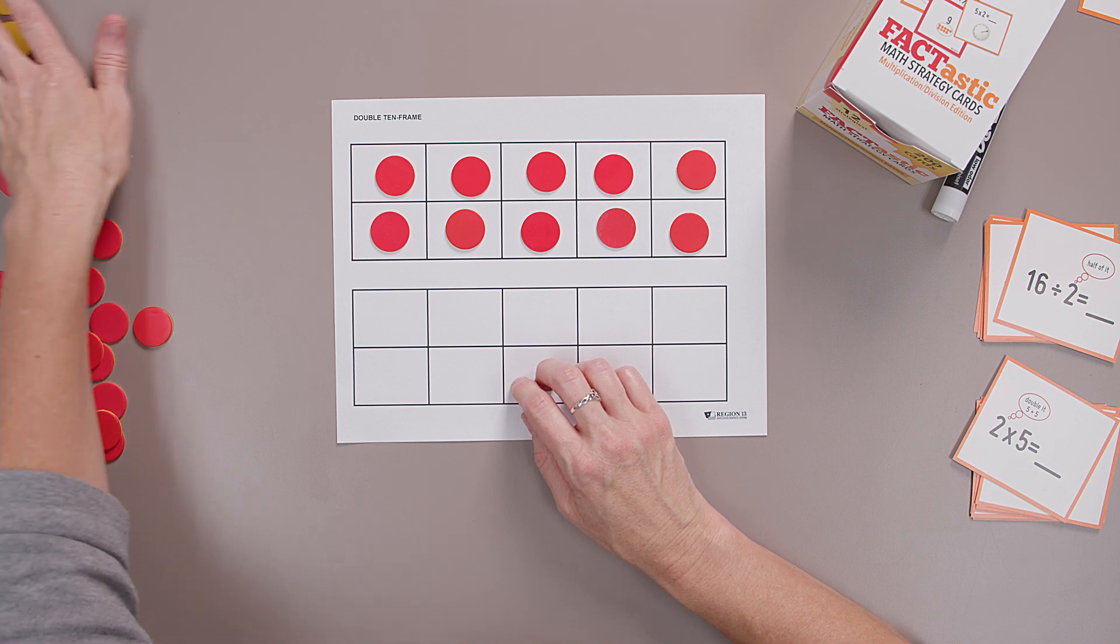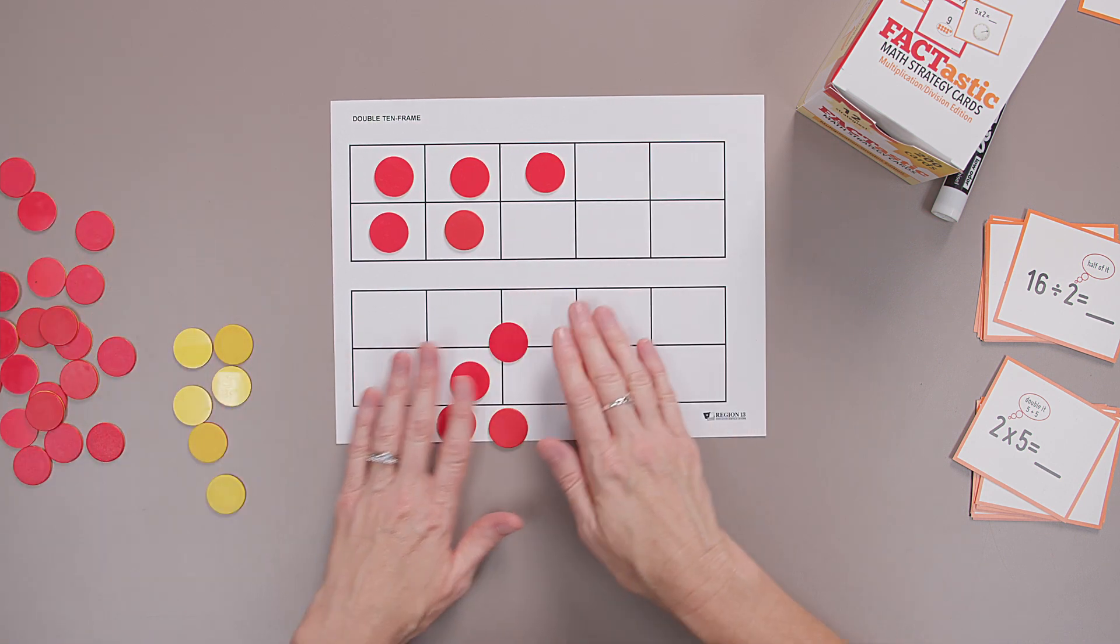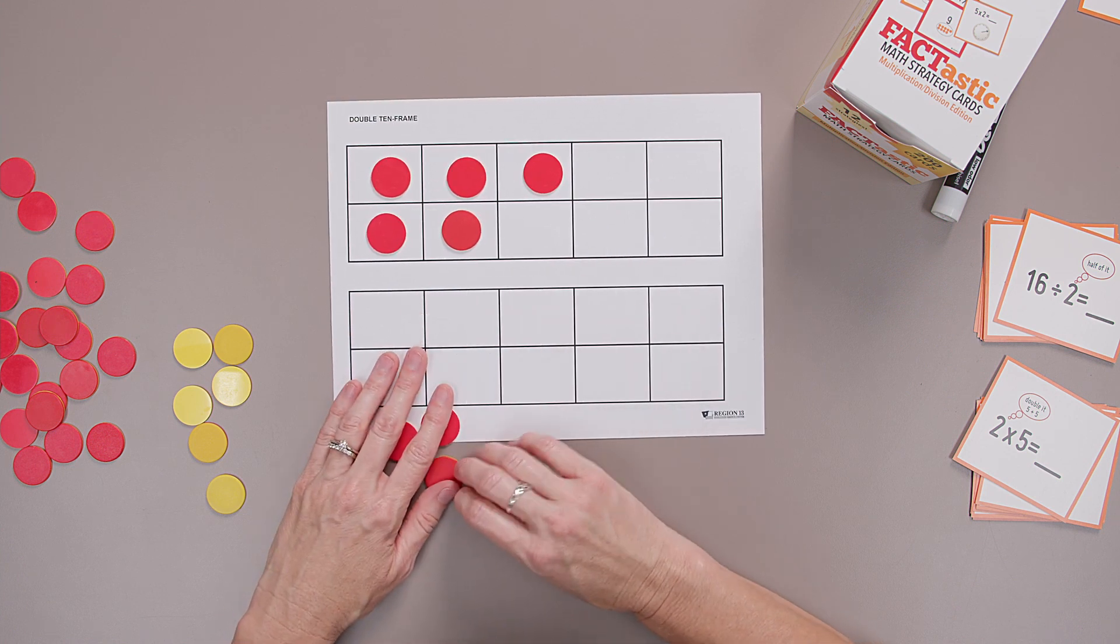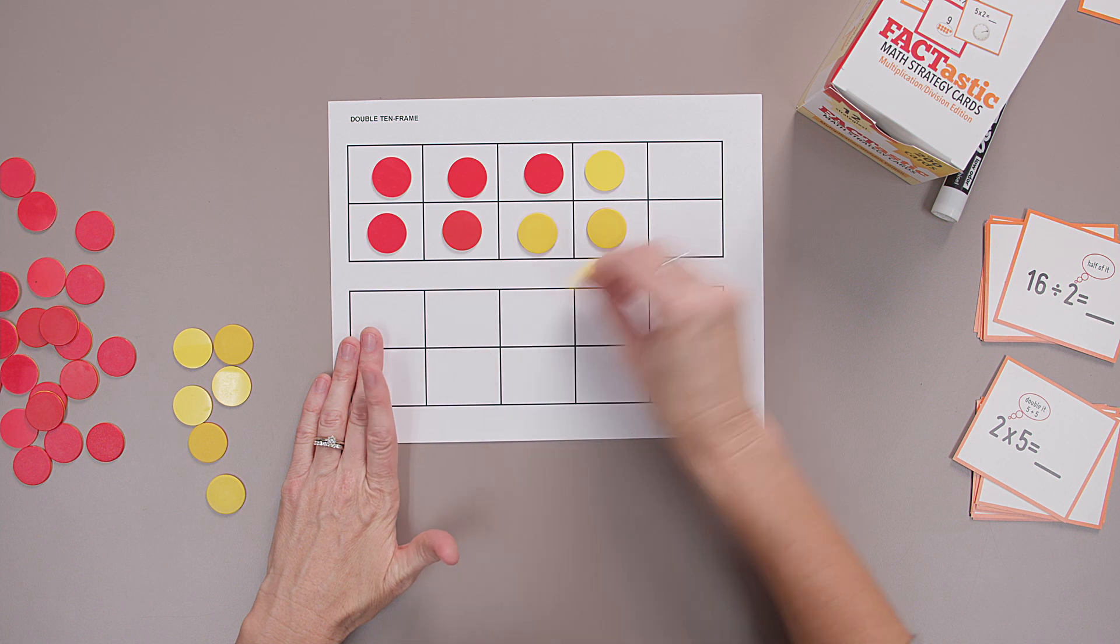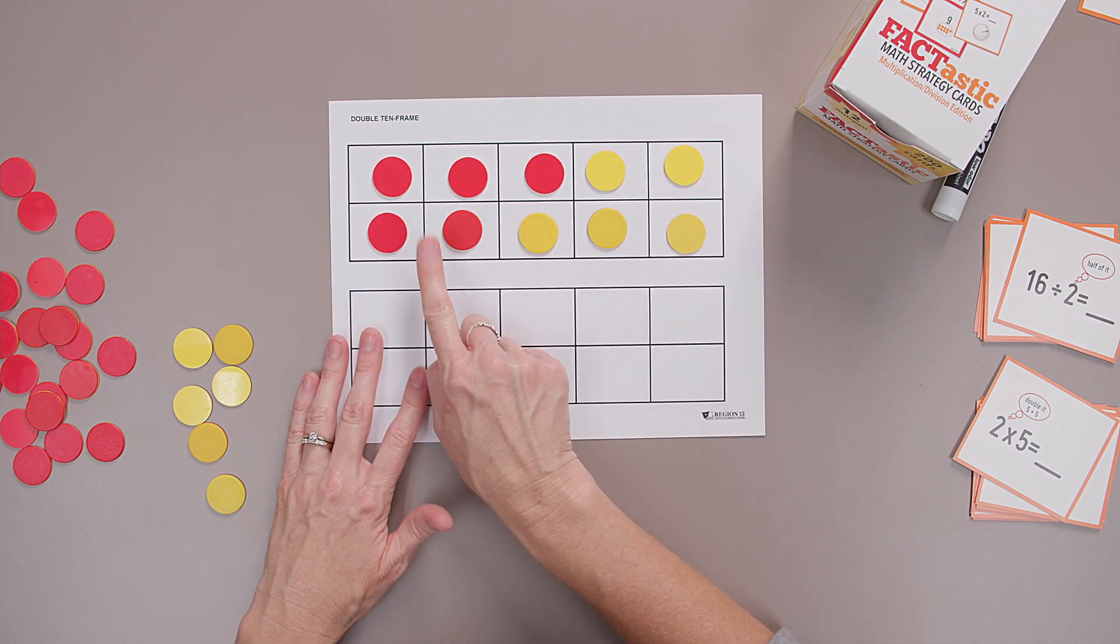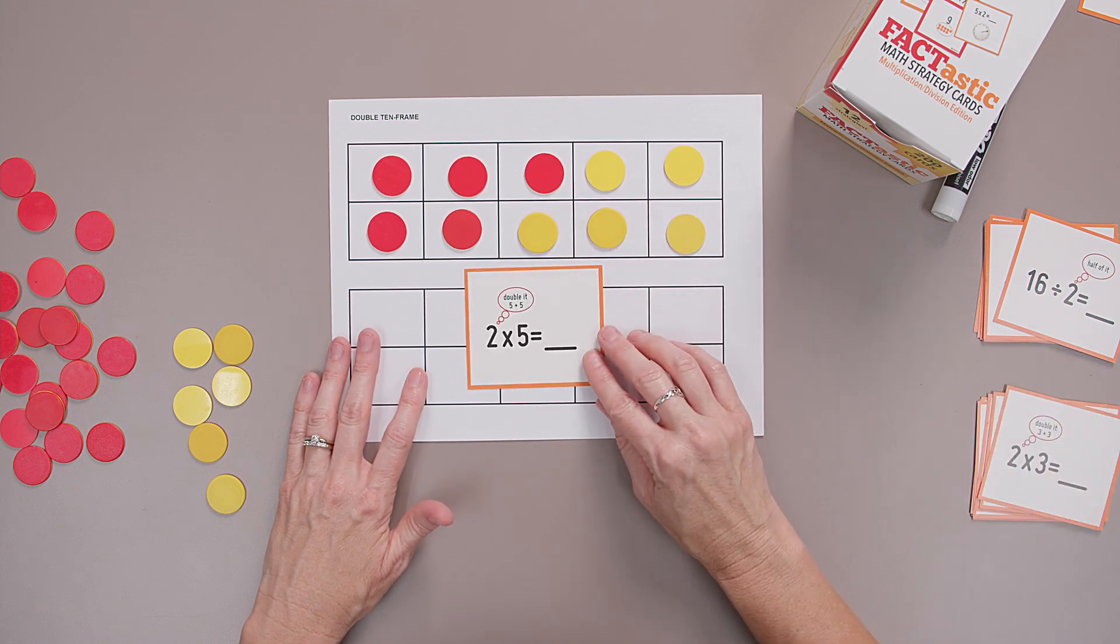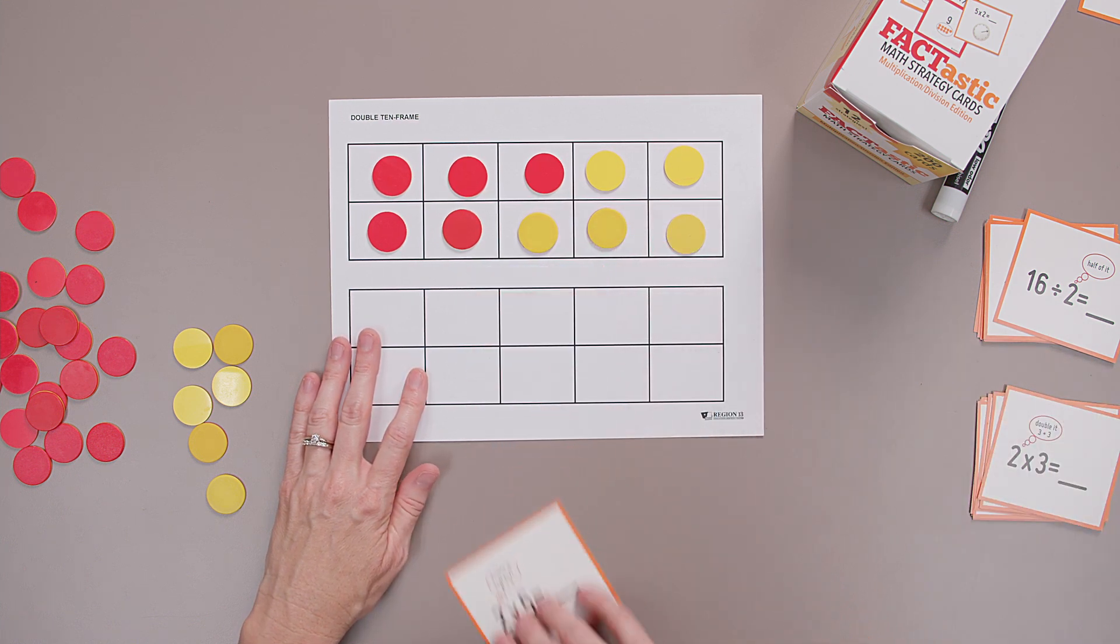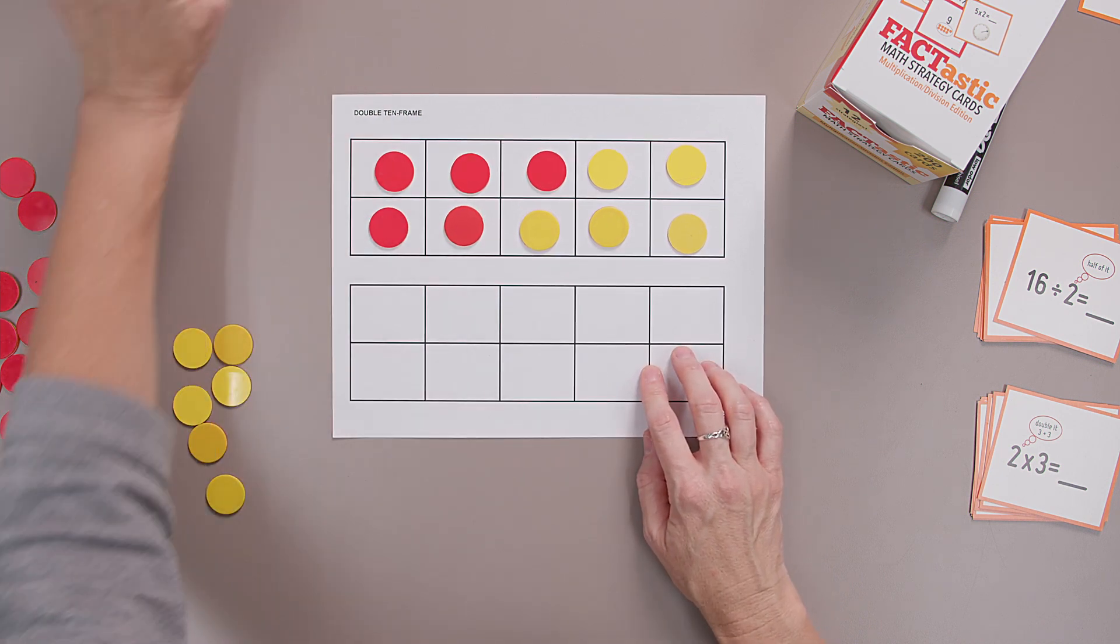Let's do another one. How about five times two? There's five. I need five more. I have two groups of five, two red, two yellow. Two times five is ten. I've doubled five to make ten.